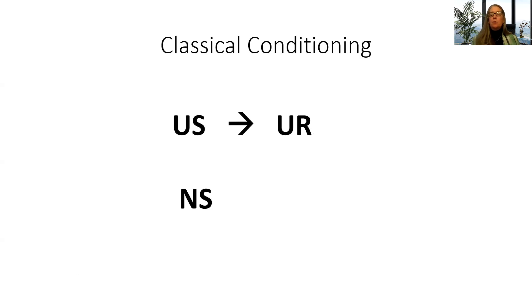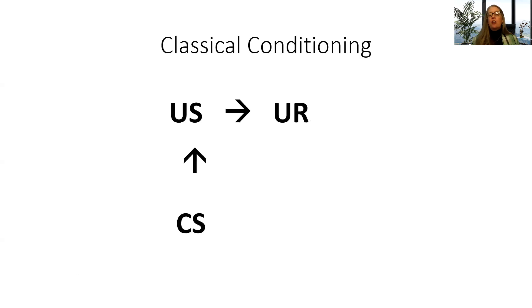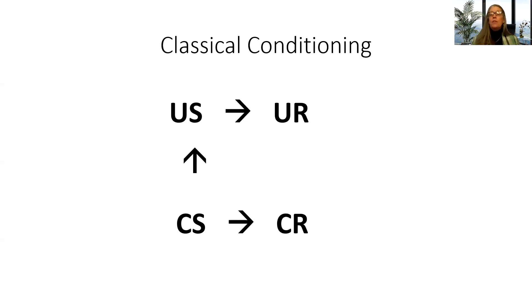What happens if we take this neutral stimulus and present it before the unconditioned stimulus? We're no longer going to call it a neutral stimulus — now we're going to call it a conditioned stimulus. If we present the conditioned stimulus, then the unconditioned stimulus, we're going to get the unconditioned response. If we do this enough times — CS-US, animal responds, CS-US, animal responds — eventually the CS alone will get the organism to respond. When the organism responds to the conditioned stimulus, we call it a conditioned response, not an unconditioned response.